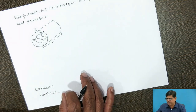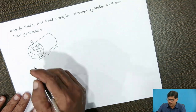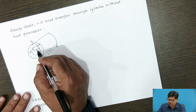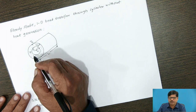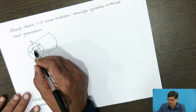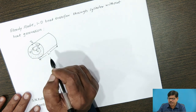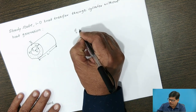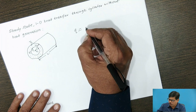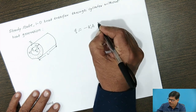Now let us see the steady-state one-dimensional heat transfer through a hollow cylinder without heat generation. We consider a hollow cylinder with inner radius R1, outer radius R2, made of material with thermal conductivity K. The temperature on the inner surface is T1, on the outer surface is T2, and the length of the cylinder is L. We write the Fourier law for the radial coordinate: Q = −KA dT/dr.